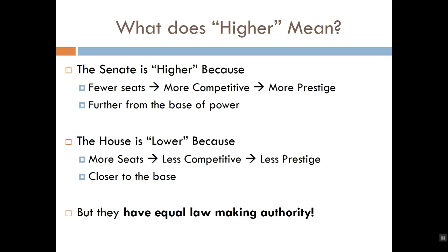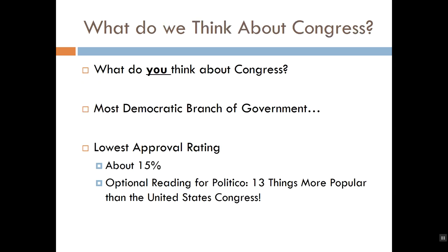Senators might get more prestige, but they aren't endowed with any additional lawmaking authority and they still need the House to support them if they're going to get anything done. Now that we know what the legislative branch is and how it's structured into two separate chambers and how these chambers relate to one another in their co-equal lawmaking authority, let's take a second to discuss how people tend to feel about the legislative branch.